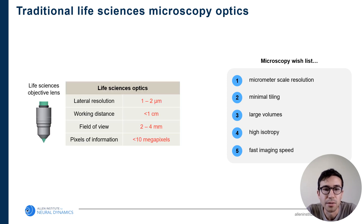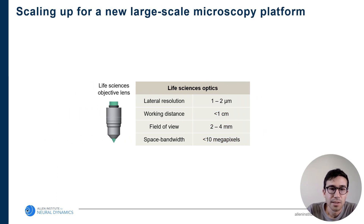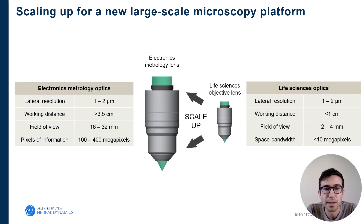When you look at life science optics from all the vendors, their offerings fall into a similar spec range: if you want a lateral resolution of a few microns, the working distance is probably less than a centimeter, the field of view will be a few millimeters, and when paired with a camera, the number of pixels of information captured is probably less than 10 megapixels. In this new system, we've decided to not just scale up the brain through expansion, but also scale up the imaging system by choosing new lenses from the electronics metrology space. When you look at the optics available in that industry, they have tremendous specifications — for the same resolution of one to two microns, the working distances can be several centimeters, the fields of view can also be several centimeters, and the amount of information transmitted to the camera is on the order of hundreds of megapixels.